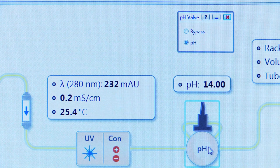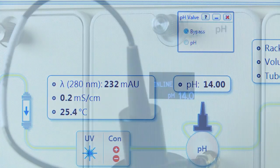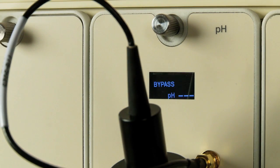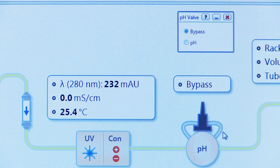Confirm proper operation of the valve by selecting Bypass Position. The pH valve should move to the new position, and the valve diagram should reflect the change along with an audible click.